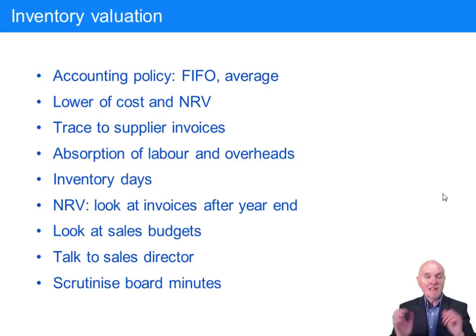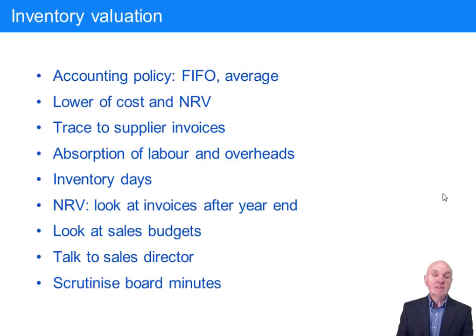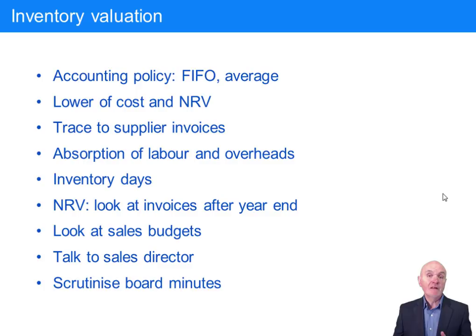For net realisable value you can also look at invoices issued after the year end — if the actual selling value of items in January is below cost, you would have to write them down. You can also look at sales budgets and talk to the sales director. Finally, if there is a really important issue, you'd look for reference to it in the board minutes, where the sales director may have to confess that the sales budget is going to be down because certain items of stock can't be sold, and propose reducing their selling price.